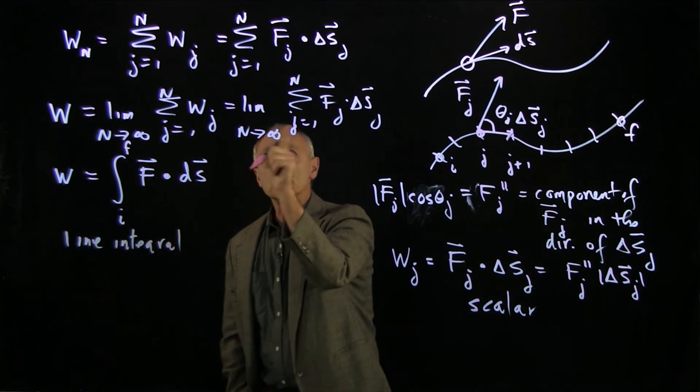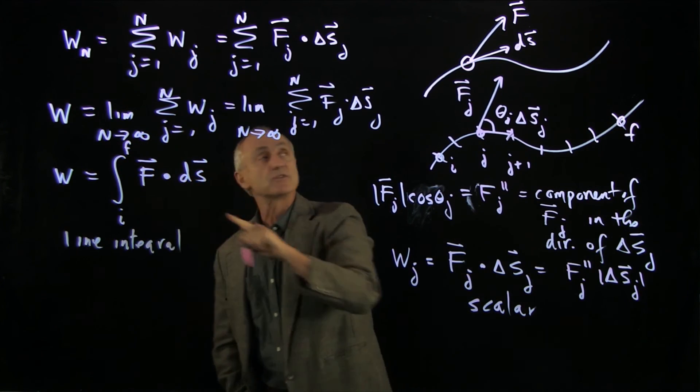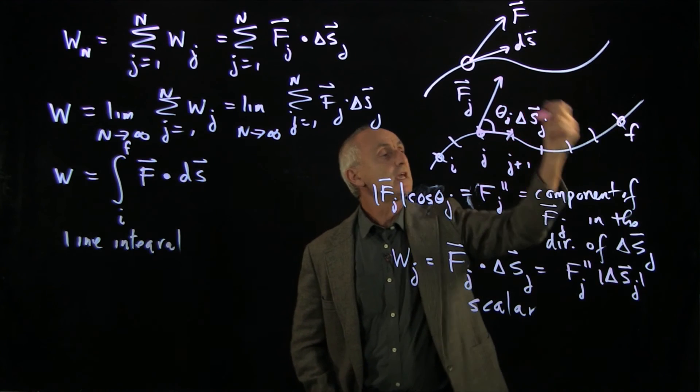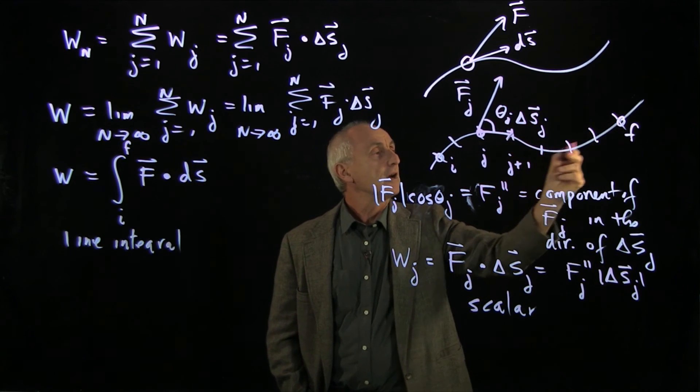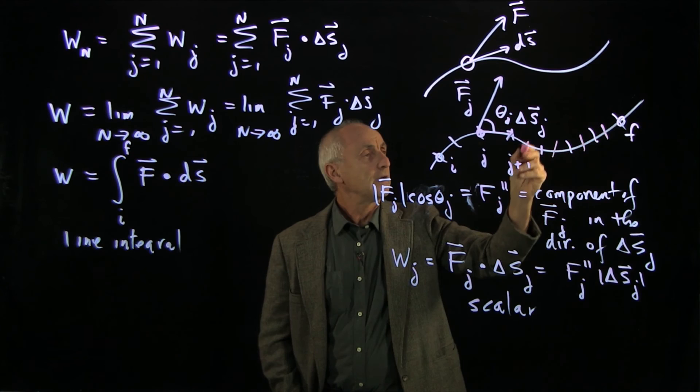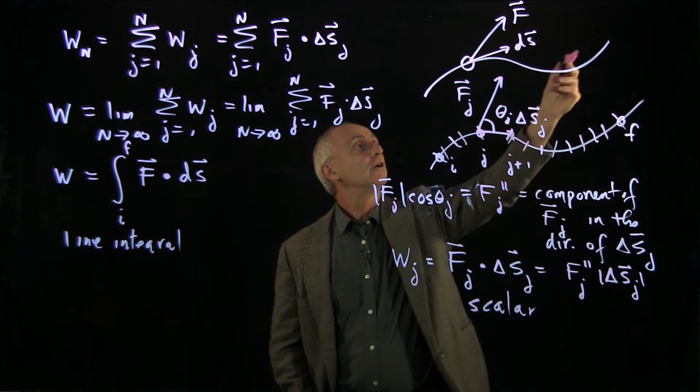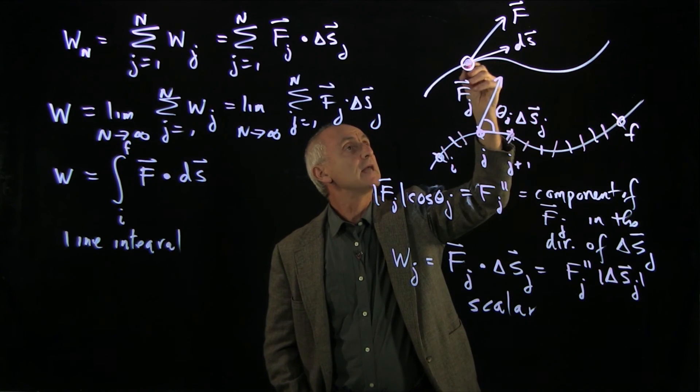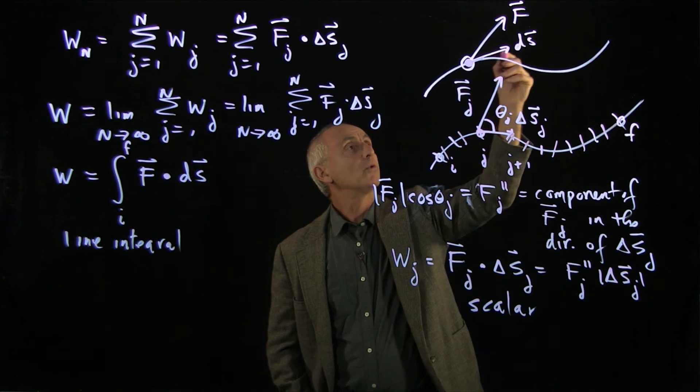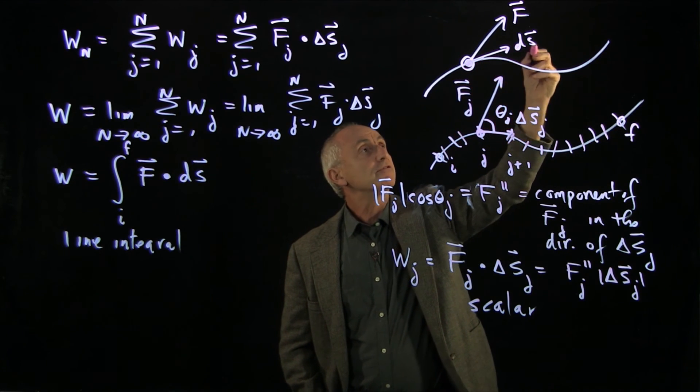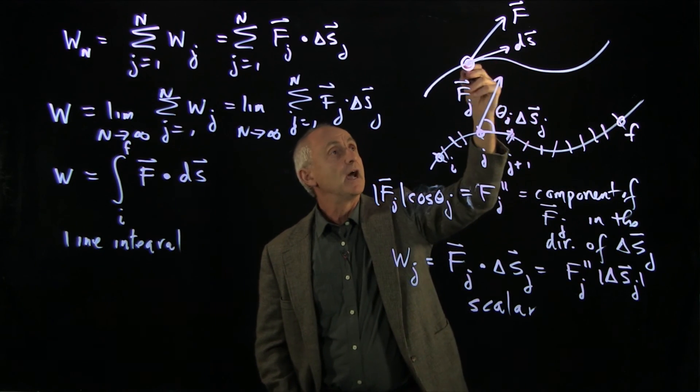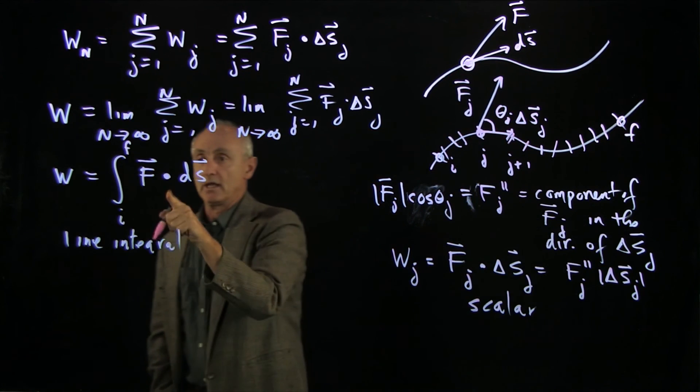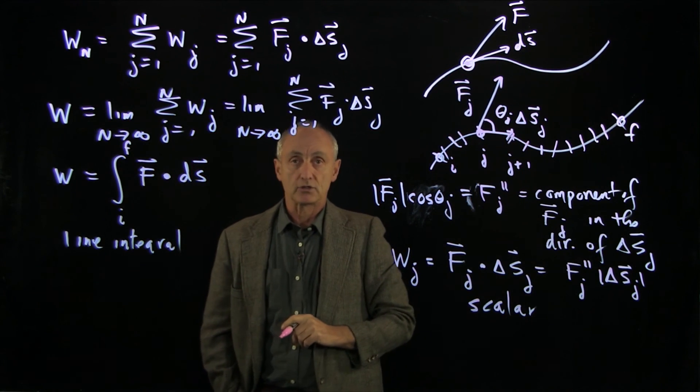Again, why did we switch from our delta s's to ds's? Because when we take the limit as n goes to infinity, our grid becomes finer and finer and finer until we're shrinking down to a point where we can just talk about the differential displacement, ds, and the force acting on a point. And that's what our line integral is.